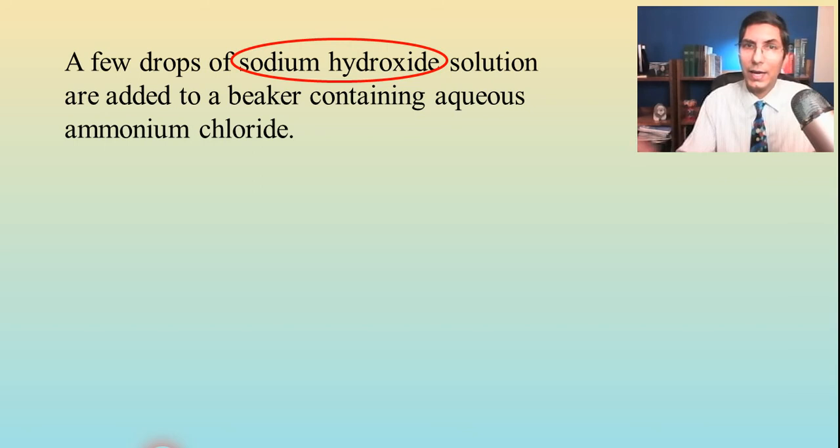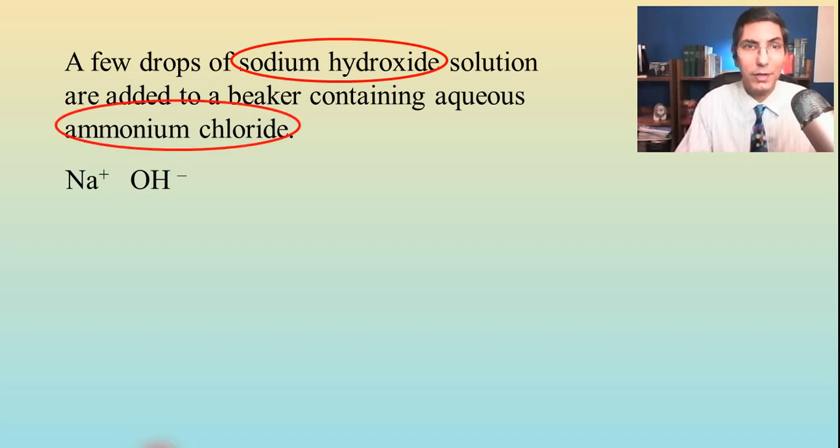So we're going to have to write it in its ionized form, like that, sodium ions and hydroxide ions. And then we have ammonium chloride. And that's certainly a soluble compound. Anything that has ammonium on the front of it is soluble. So I'm going to write that in its ionized form. It's dissociated.